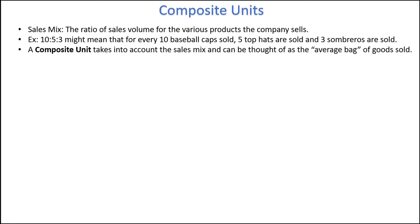Now, don't get confused here. This doesn't mean that the company has a bundled deal to sell 10 baseball caps, 5 top hats, and 3 sombreros at some deal-breaking price all bundled together — although if they wanted to, they could do that. The composite unit here just means that when we consult our sales records at the end of the month, they tend to end up in these proportions.